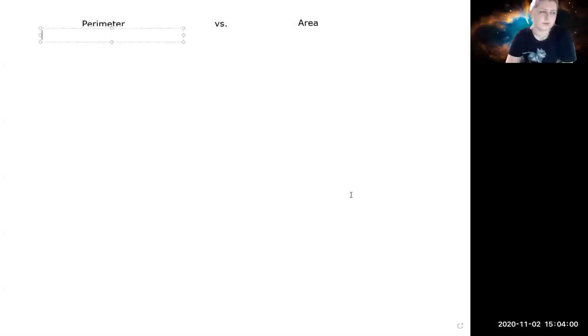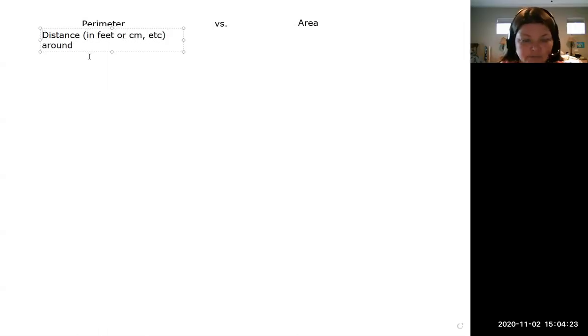Okay, so the perimeter is like the distance, like feet and centimeter and et cetera. So it's like the stuff that goes around. And I'm going to slip one word in there, the total distance around.